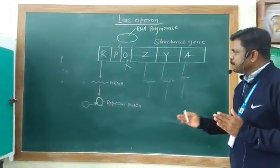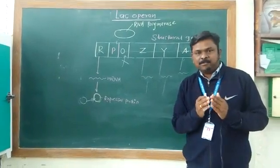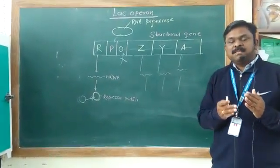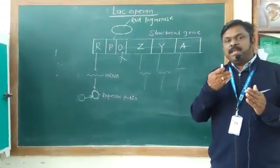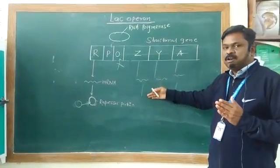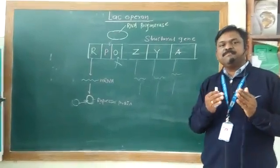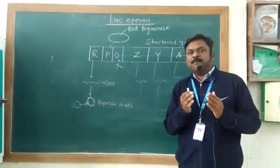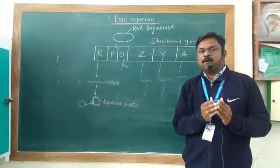It means when the bacteria are present in a lactose medium, the genes are switched on. The enzymes are produced, and those enzymes are utilized for the degradation of lactose. So this type of regulation was observed by the scientists Jacob and Monod.